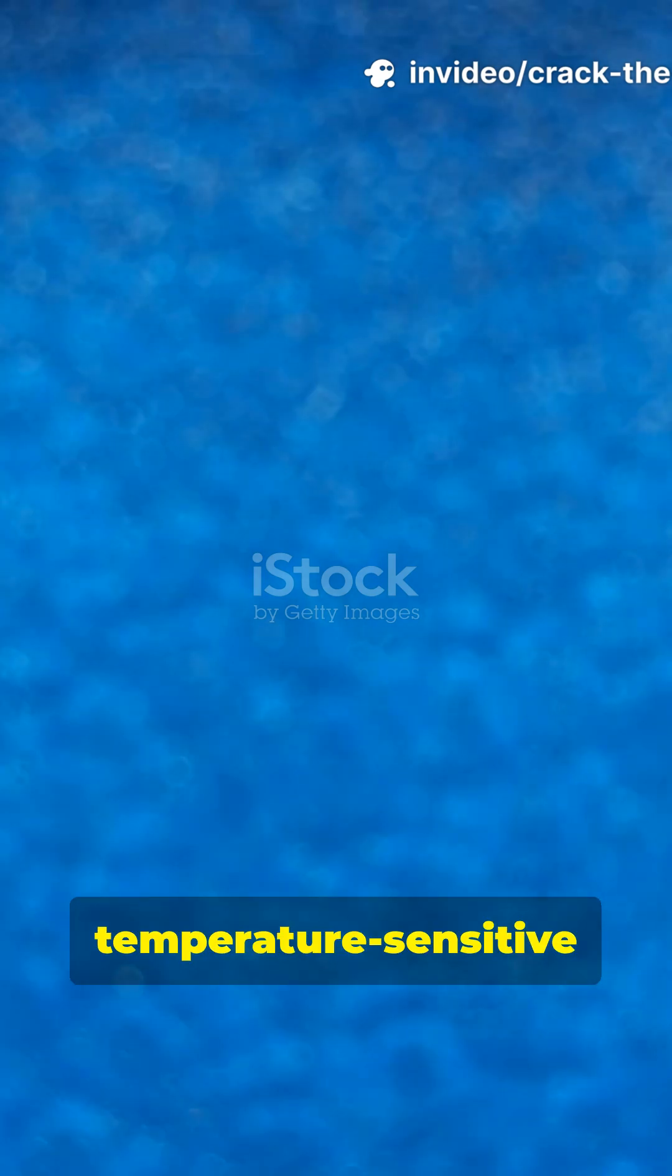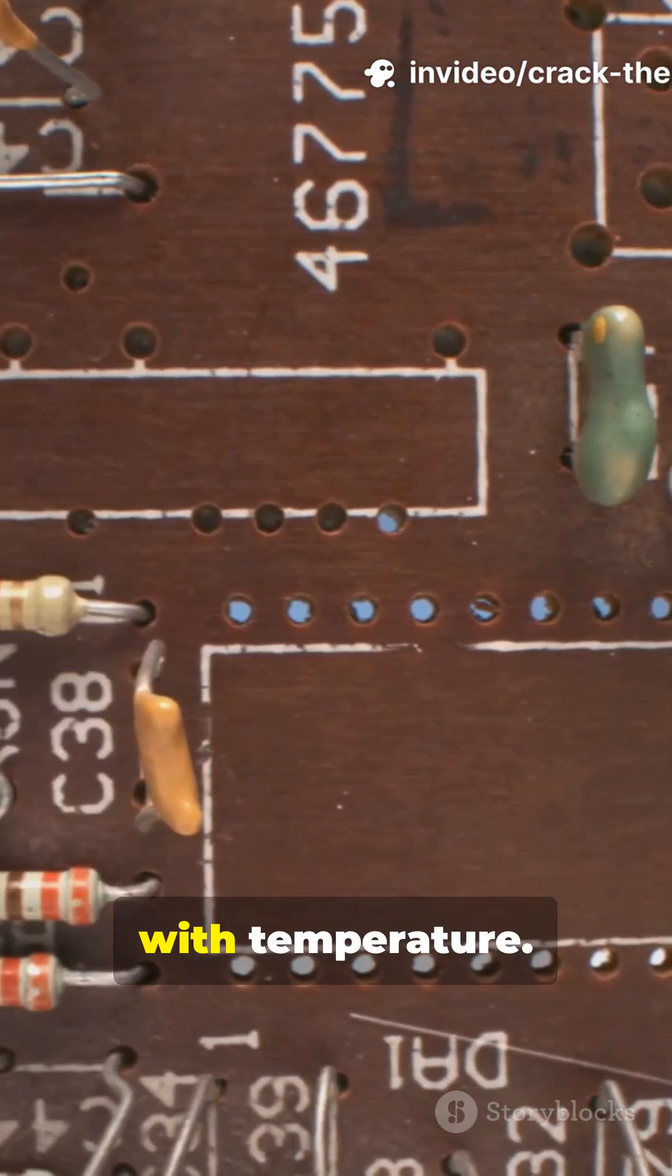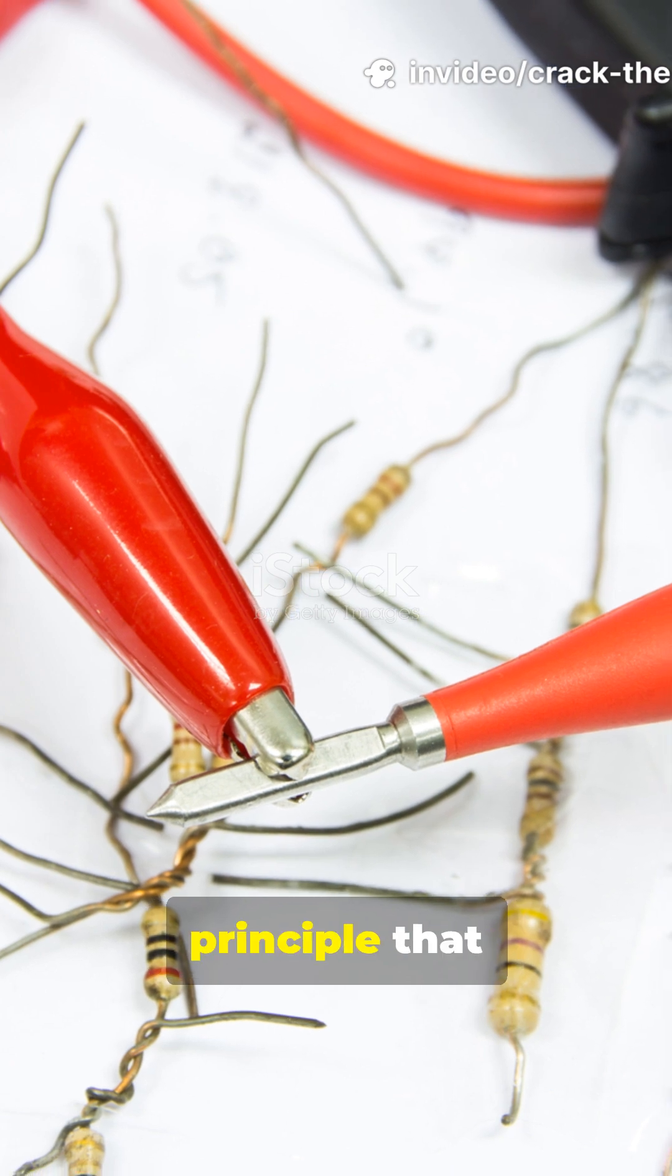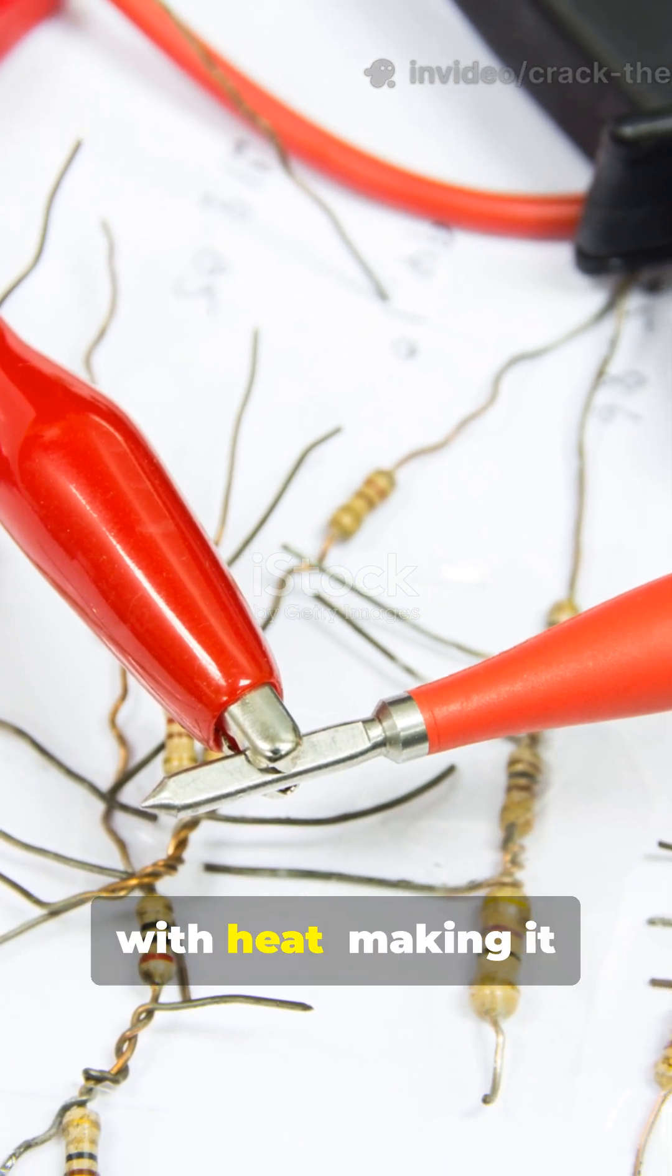A thermistor is a temperature-sensitive resistor whose resistance changes with temperature. It works on the principle that resistance varies with heat, making it perfect for sensing and control.